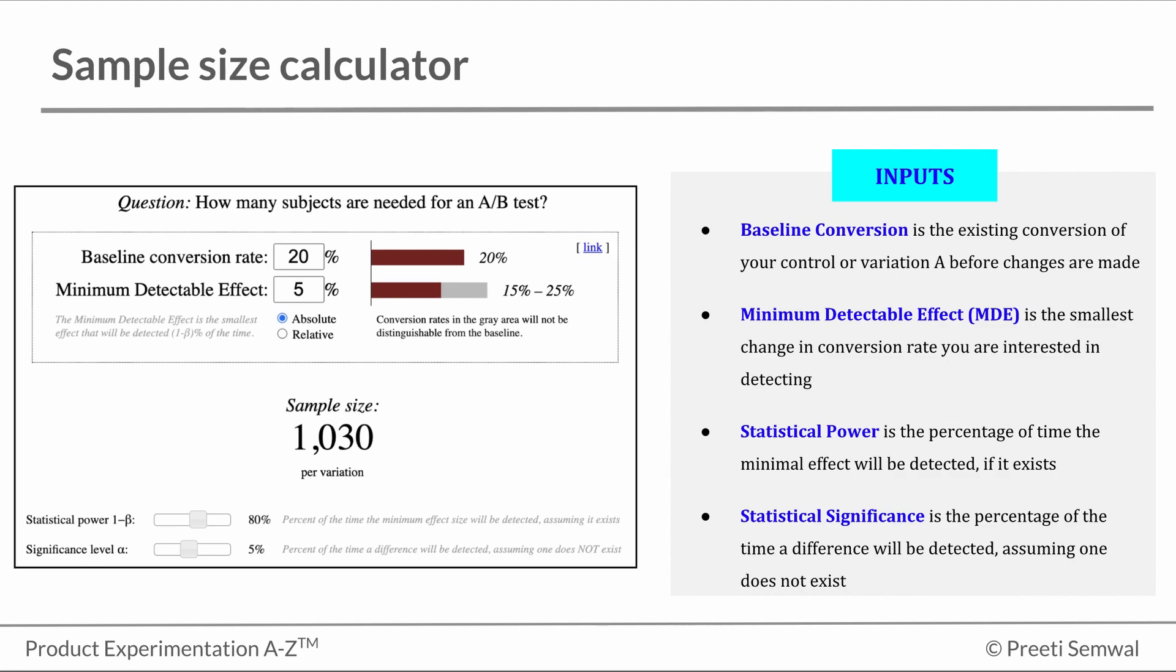And statistical significance, which is the probability of rejecting a null hypothesis when it's true, or in other words, it's the percentage of time a difference will be detected assuming one does not exist.